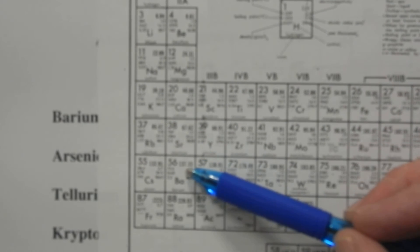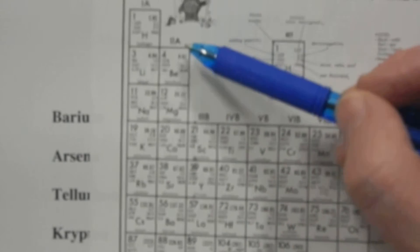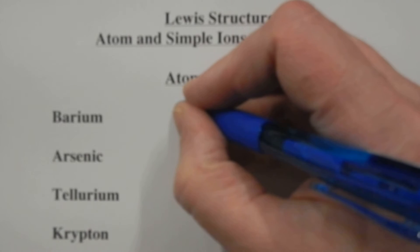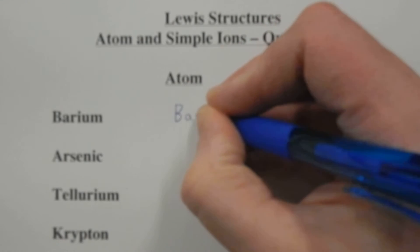The first one says barium. So when we look for barium, we find it right here on the periodic table, and we see it's group 2. So there it is, Lewis structure, dots on separate sides, they cannot be on the same side.